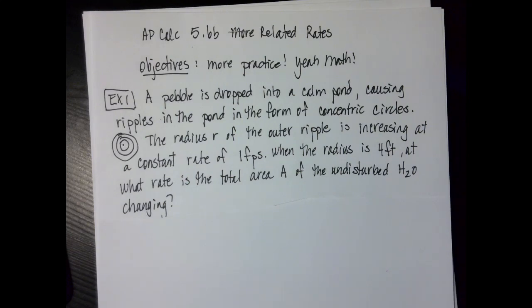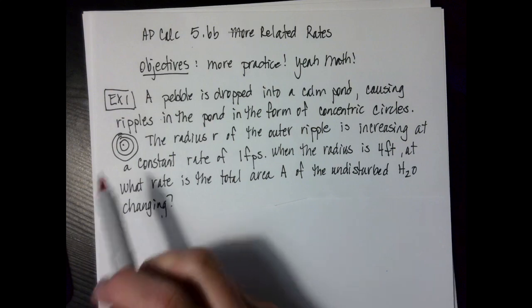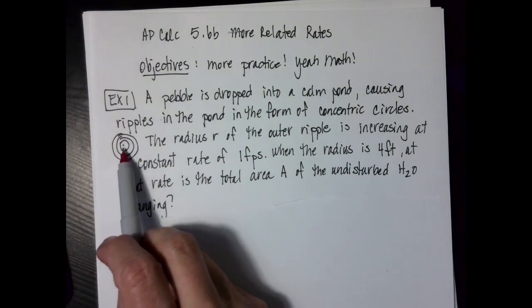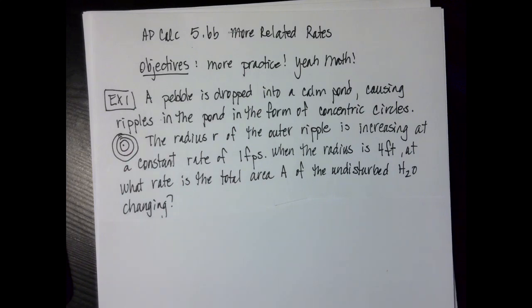Example number one: a pebble is dropped into a calm pond causing ripples in the pond to form concentric circles. In case you don't remember, concentric circles have the same center point with different radii. The radius of the outer ripple is increasing at a constant rate of one foot per second. When the radius is four feet, at what rate is the total area of the undisturbed water changing?